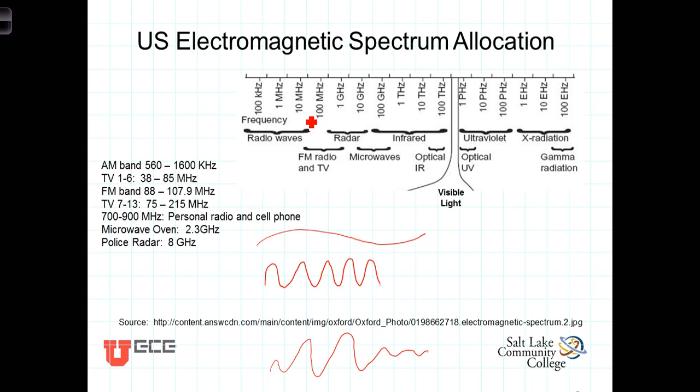The FM radio dial goes from 88 megahertz up to 107.9 megahertz, again referring to their carrier frequencies, and so on. The microwave oven is dedicated at 2.3 gigahertz. That's the frequency that the hydrogen-oxygen molecular bond of water oscillates most efficiently.